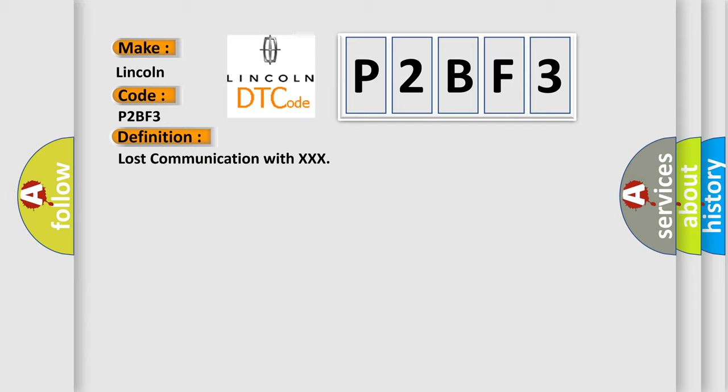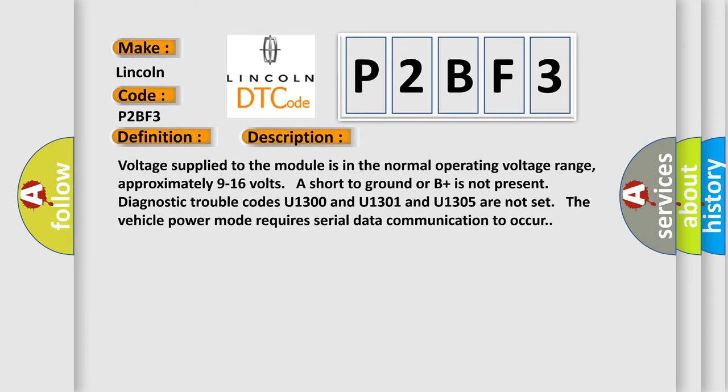And now this is a short description of this DTC code. Voltage supplied to the module is in the normal operating voltage range, approximately 9 to 16 volts. A short to ground or B plus is not present. Diagnostic trouble codes U1300, U1301, and U1305 are not set. The vehicle power mode requires serial data communication to occur.